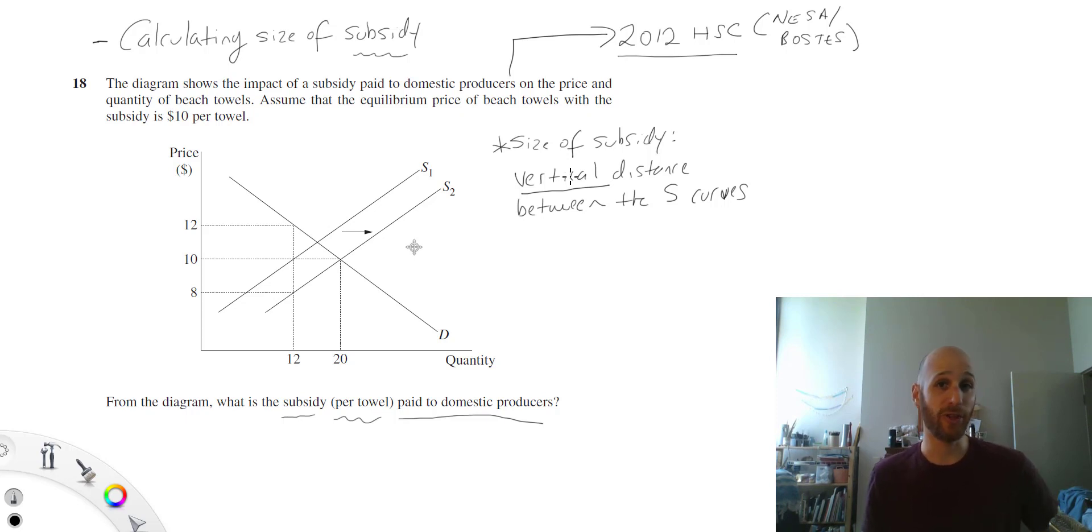Let's do this using an example. We know from the question that the equilibrium price of beach towels with the subsidy is $10 per towel. So we know here that this is the price with the subsidy.